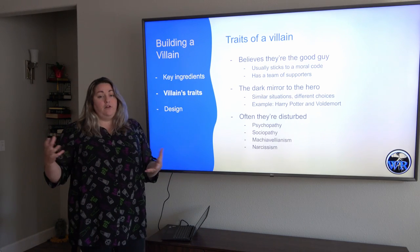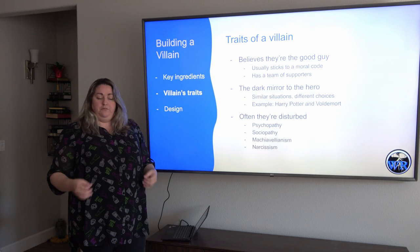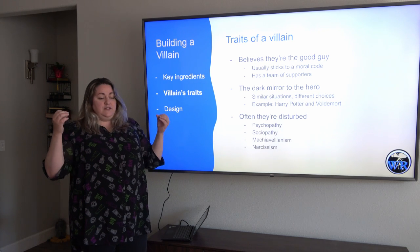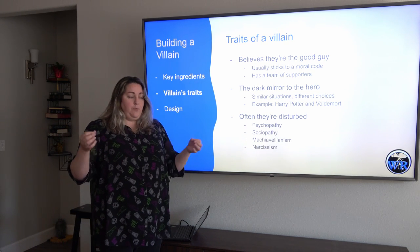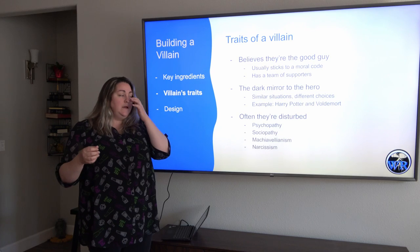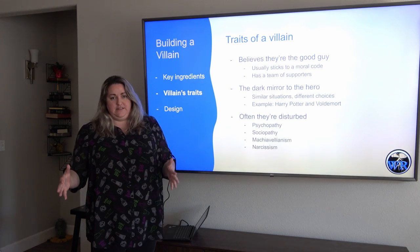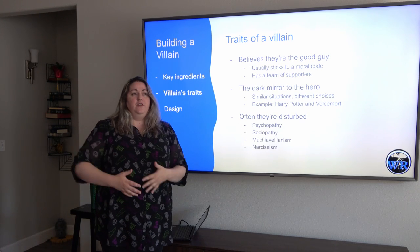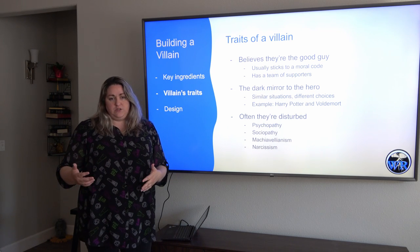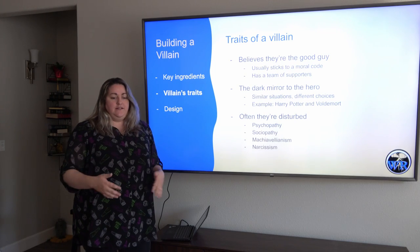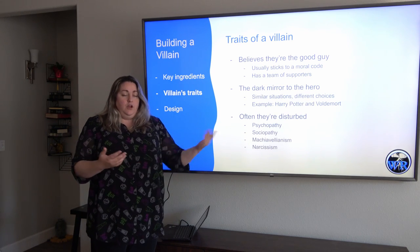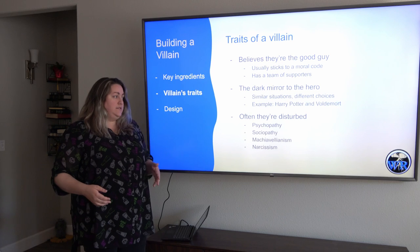An example of that is Harry Potter and Voldemort. Both orphans, both grew up in terrible situations, both discovered later that they were magical and part of this magical society, both went to the same school and had the same mentors — yet they made wildly different decisions. Harry Potter turned out to be the good guy who made good decisions through most of his life. He always stuck up for his friends and tried to be good, while Voldemort tricked some kids in a cave and gave them nightmares for the rest of their lives.